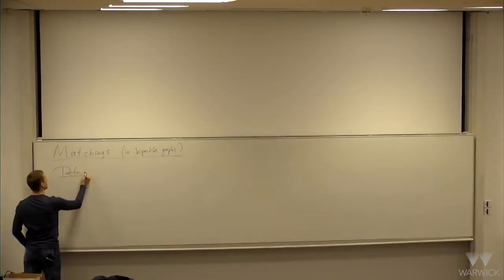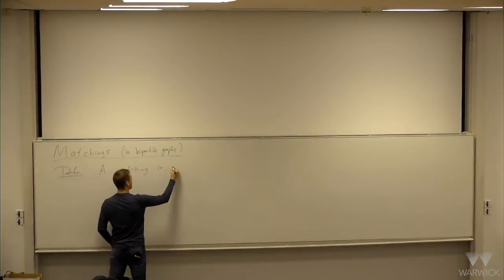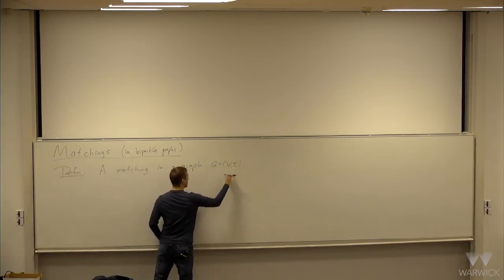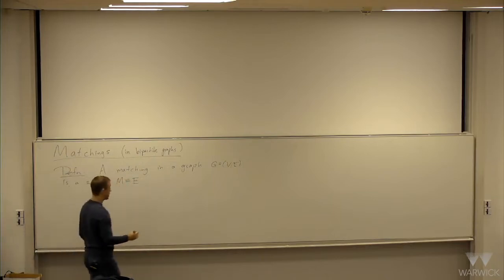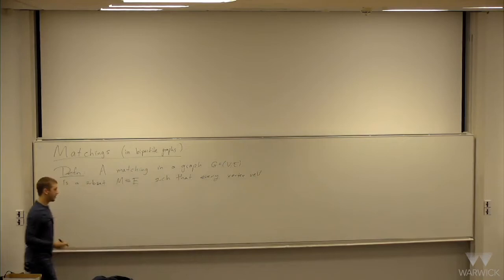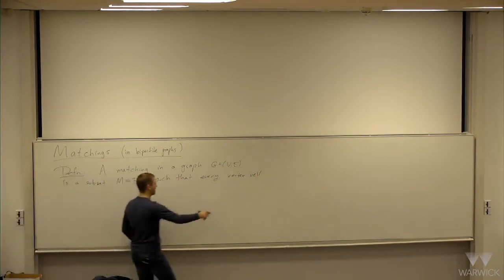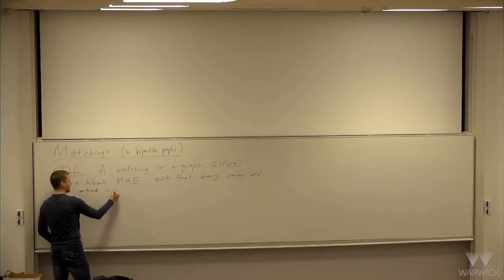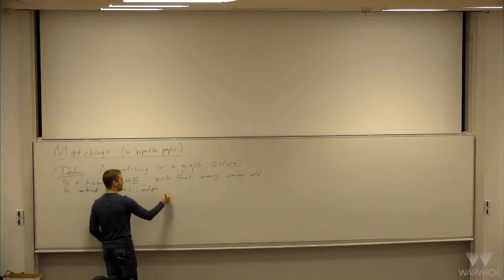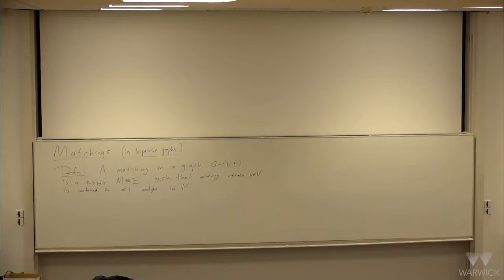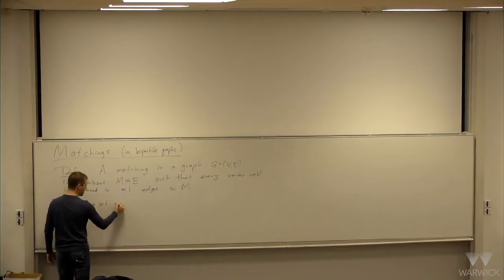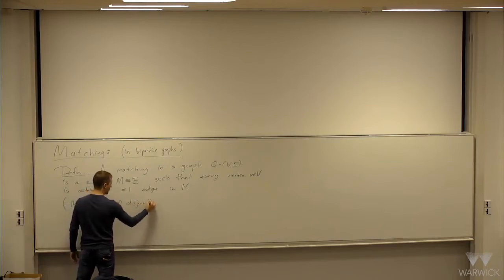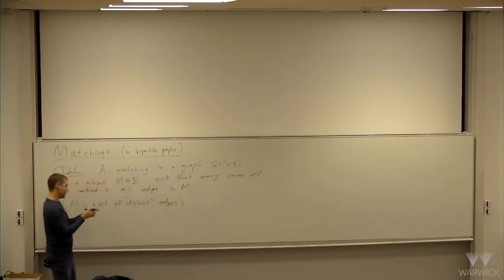So first of all, let me give you a definition. A matching in a graph G, where the vertex set is V and the edge set is E, is a subset M of the edge set such that every vertex V in V is contained in at most one edge in M. So it's a bunch of edges in your graph such that no vertex is an endpoint of more than one edge.